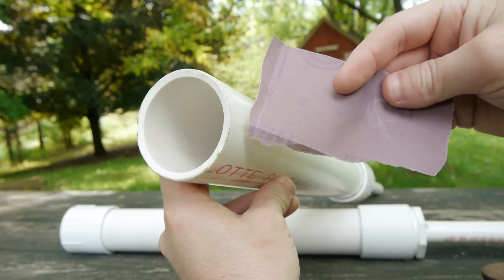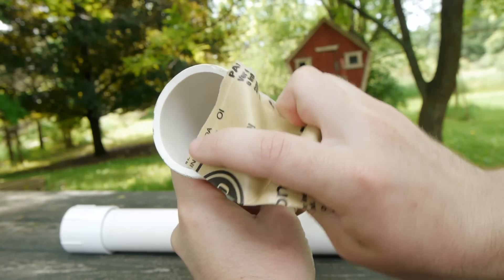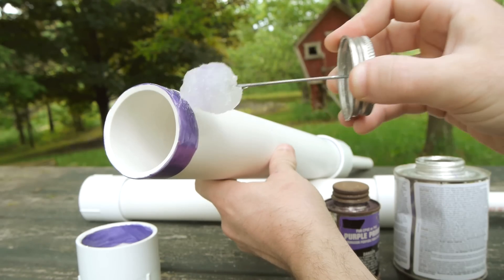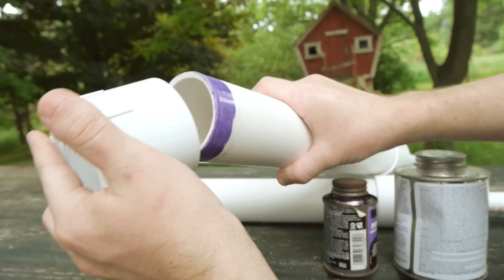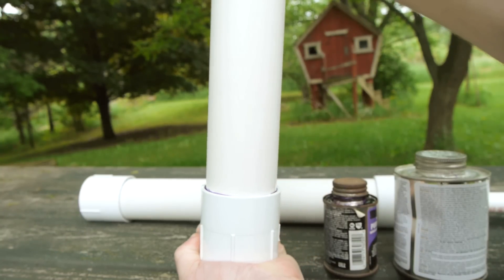Turning to the other end of the chamber, the first thing that needs to be done is to sand the inside edge of the pipe, so that the piston will later be able to slip in easily, without damage. Once any sharp or jagged edges have been smoothed away, a 2 inch female threaded adapter is glued in place, completing our work on this half of the launcher.